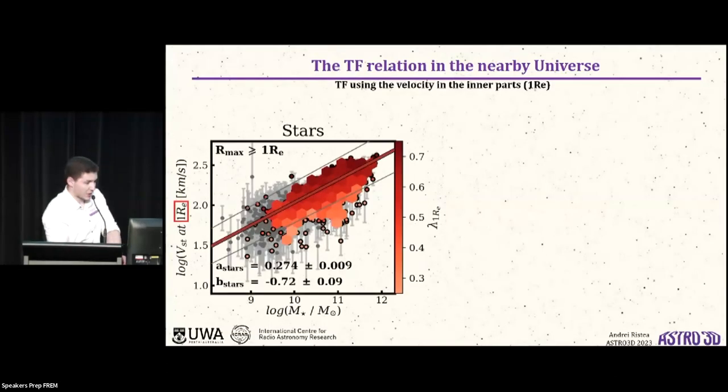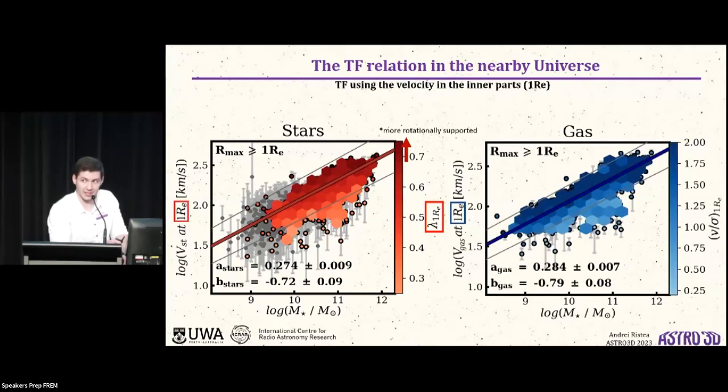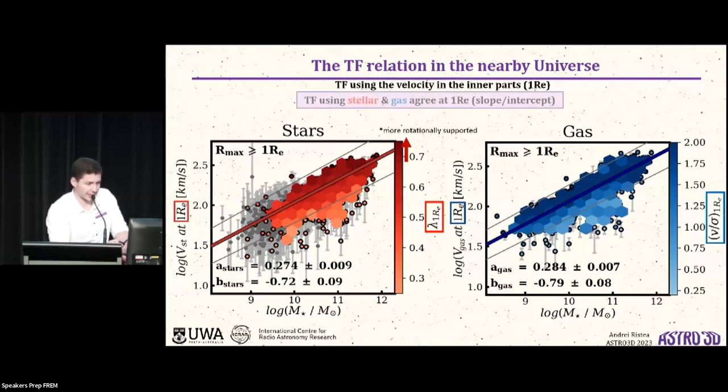So here I'm showing the stellar Tully-Fisher, so essentially the velocity of stars at one RE versus the total stellar mass in the galaxies in my sample. The color coding is according to the lambda RE spin parameter, which is a measure of the rotational support in these galaxies. So the darker the color, the more rotationally supported the galaxy will be. And what you notice is this correlates very nicely with the scatter in the relation, and I'll get to that point in a second. But if I take these exact same galaxies and plot their gas velocity versus the mass, this is what the relation looks like. So I will point out that the Tully-Fisher relations for stars and gas at one RE agree quite well in the sense that the slope and the intercept are consistent within the uncertainties. We only just get a smaller scatter in the gas relation.